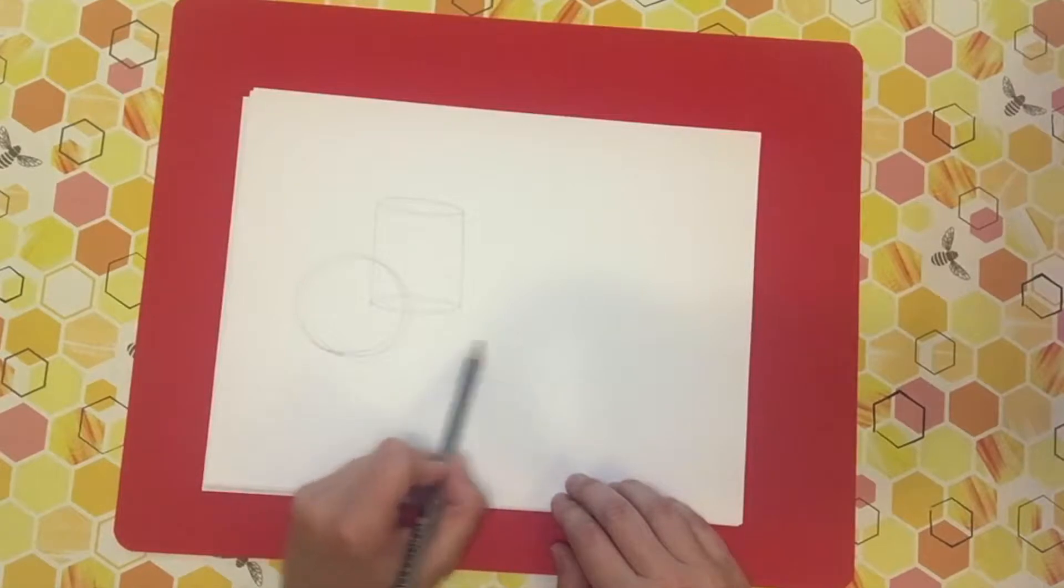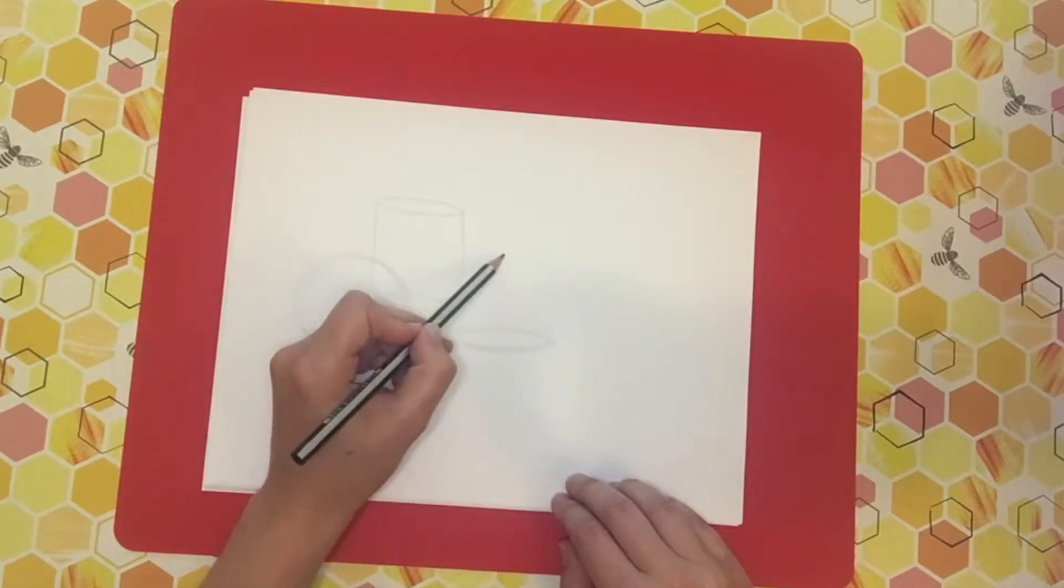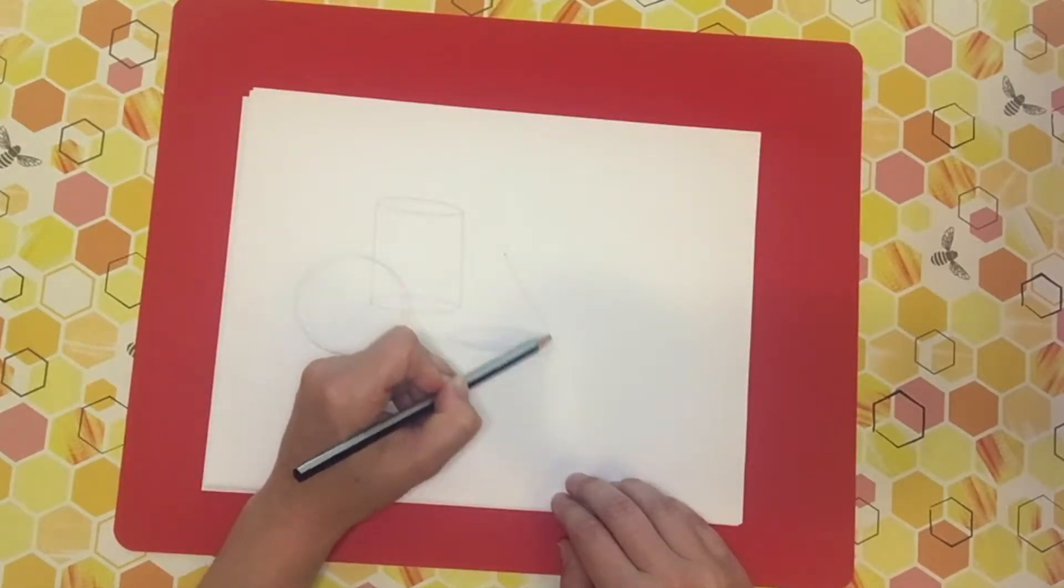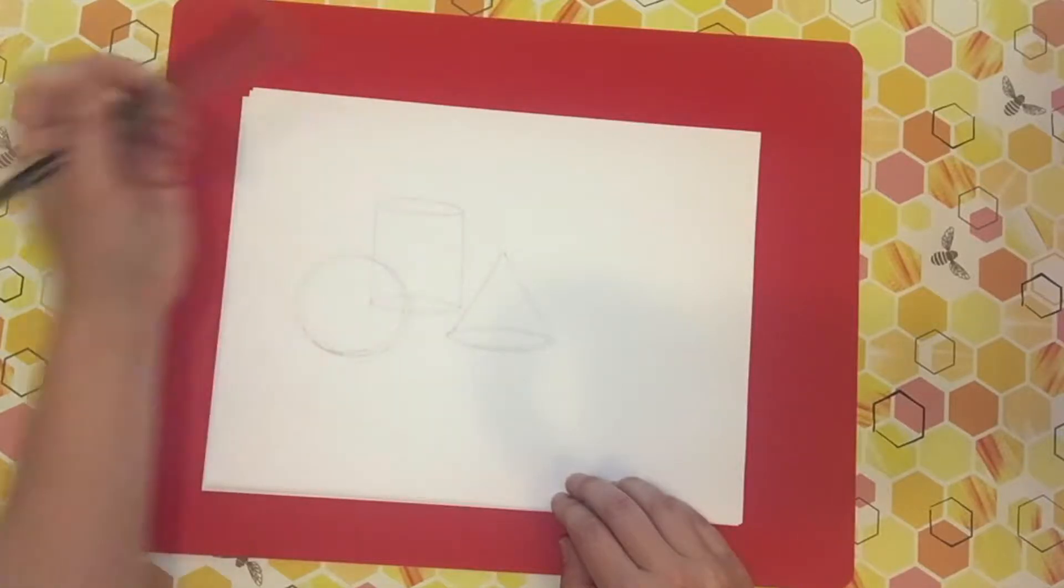Next up I'm going to create a cone. I'm going to create another ellipse and then a point up here. I'm going to connect my point to the edge of each side of my ellipse. There we go.